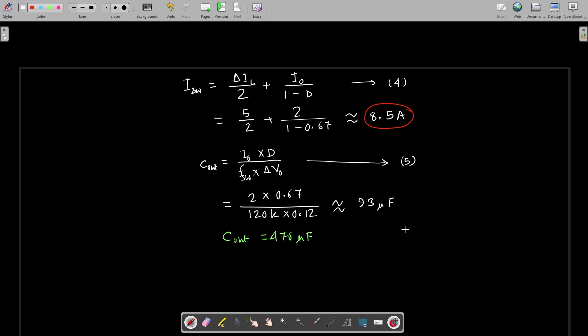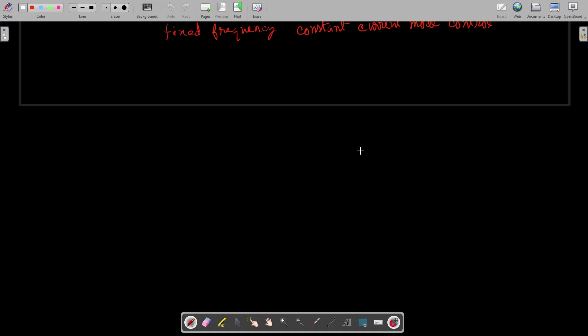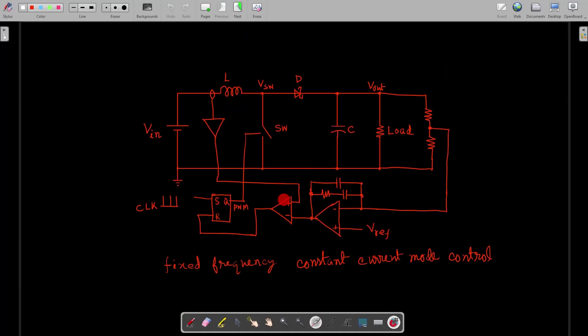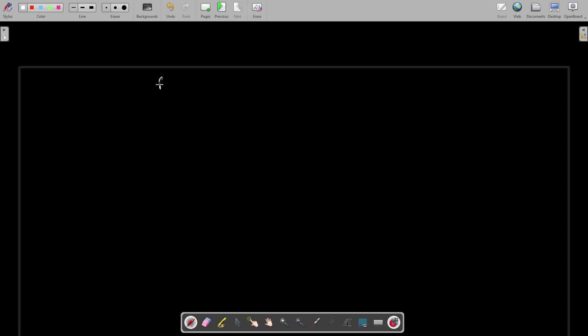Now we will design the error amplifier part. The error amplifier basically tells the controller how much difference is there between the reference voltage and the output feedback voltage. To design the compensator network we must find out first the poles and zeros of the system itself. The output capacitor pole rises at 113 hertz and it comes closer to the origin as the output current is reduced. The right half plane zero appears at 29.6 kilohertz.